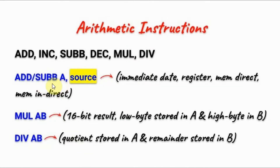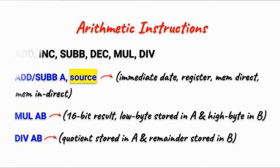We'll begin with the addition or subtraction instruction. The instruction itself is made of two parts: the opcode — and here we have two kinds of opcodes, either add or subtract with borrow — and the operand, which is made of two arguments: the source and the destination. A closer examination of the operand: the destination must always be the accumulator.